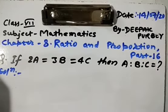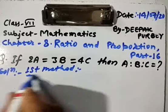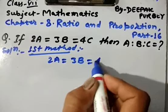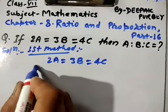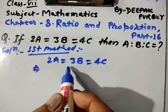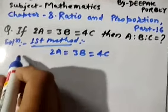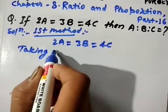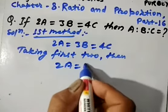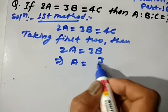This question can be solved by two methods. First method: 2a = 3b = 4c. From this relation we find the value of a and c in terms of b. Taking the first two parts: 2a = 3b. From here we find the value of a, which is 3/2 × b.